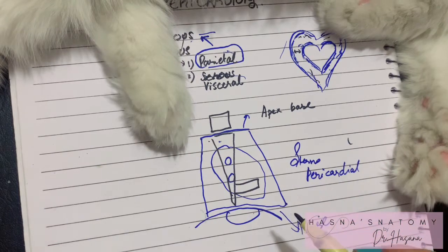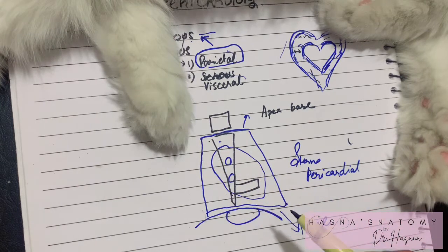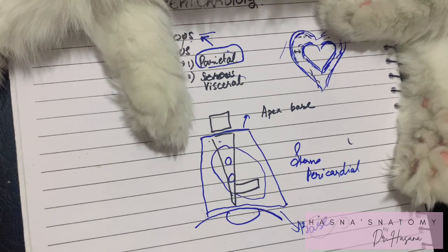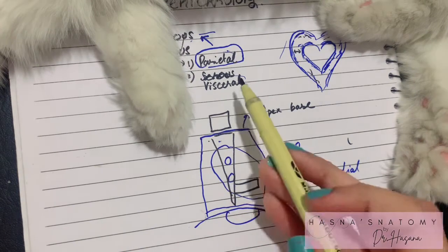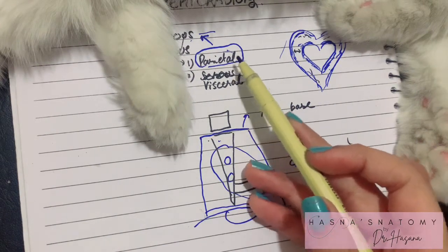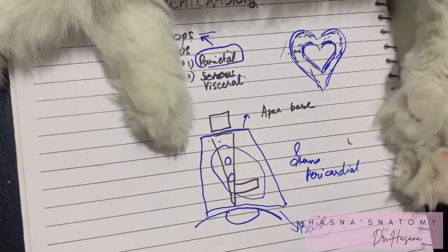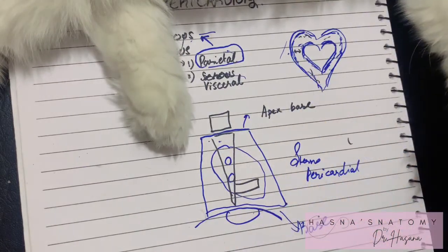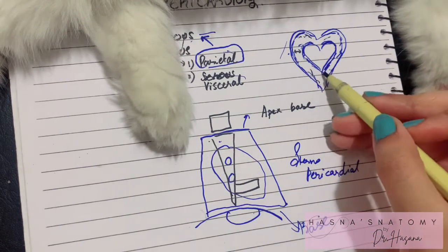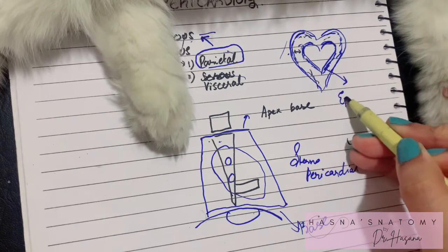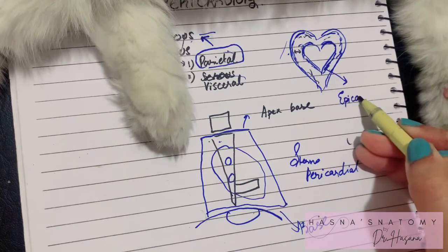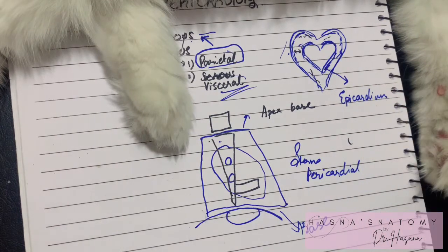On each side of the fibrous pericardium is the mediastinal pleura, and it lies within the middle mediastinum. The serous pericardium is a double layer: the parietal layer is attached to the fibrous pericardium, and the visceral layer is closely attached to the heart. The visceral layer attached to the heart is known as the epicardium.